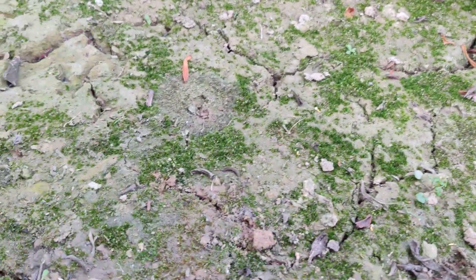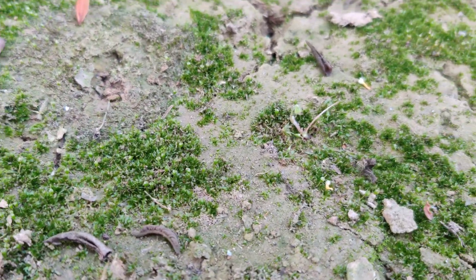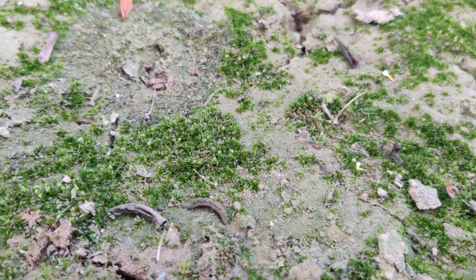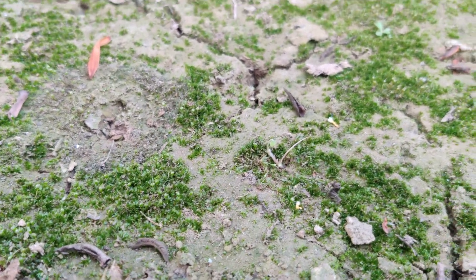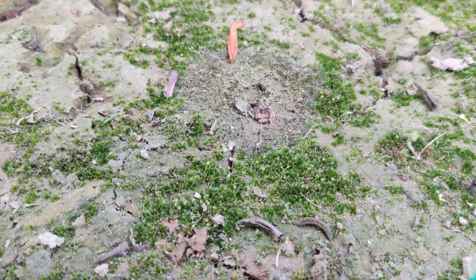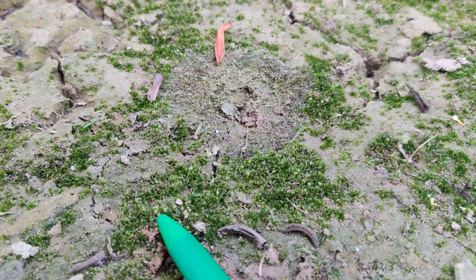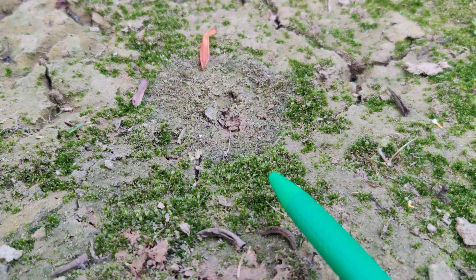You can see, all these green structures are moss plants. And you can observe the rounded structures at the tip. And these round structures are capsules.